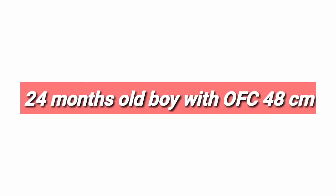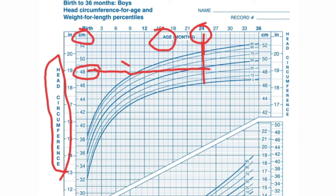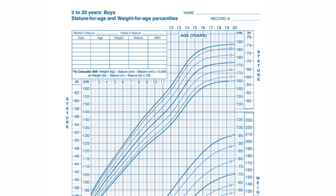Next is the birth to 36 months boys' head circumference-for-age chart. Using the same boy aged 24 months: on the x-axis we mark the age as 24 months and on the y-axis we mark the head circumference, which is 48 cm. We combine both values and follow the centile line — the head circumference is falling on the 50th centile.